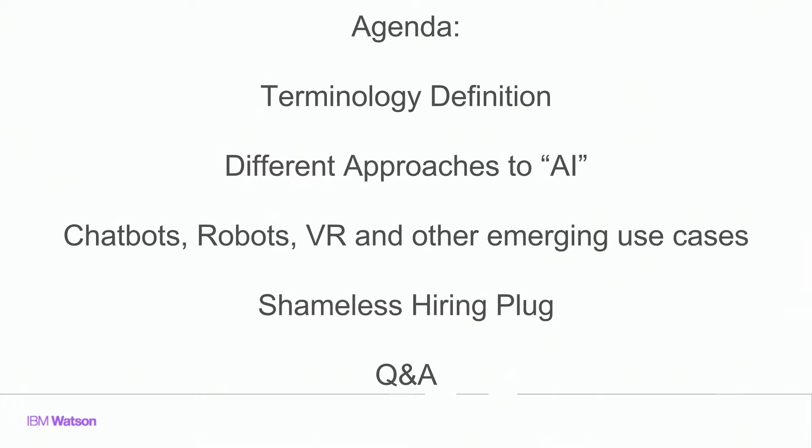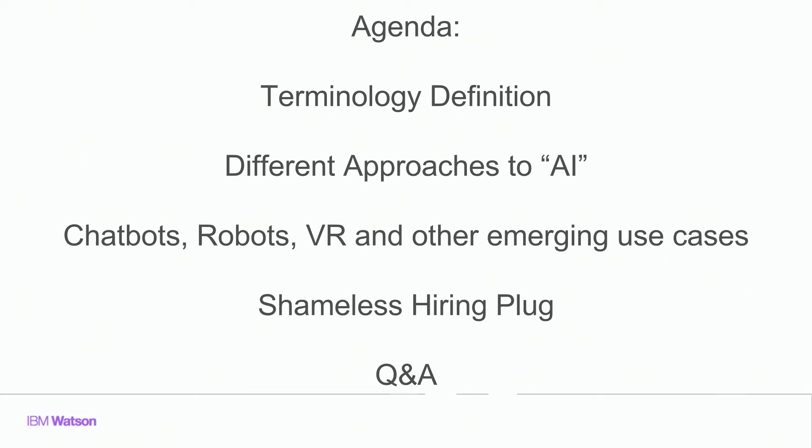So just the agenda — what I want to talk about. My dad grew up reading the Oxford English Dictionary, so I'm always careful to define terms before I use them. After a little terminology definition, that'll lead us into an overview of different approaches to artificial intelligence I've seen of late — industry-wide analysis of the emerging AI business community. Then I'll give a few examples mostly from the Watson world around chatbots, robots, and virtual reality, then a shameless plug and copious Q&A.